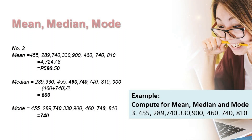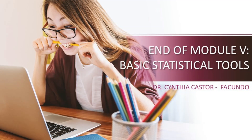What about the mode? Numbers that are doubled or tripled — here, 740 appears twice. So the mode is 740. This is the end of Module 5, Basic Statistical Tools. This is only basic, and we will further discuss the different statistical methods that you can use in your business research.